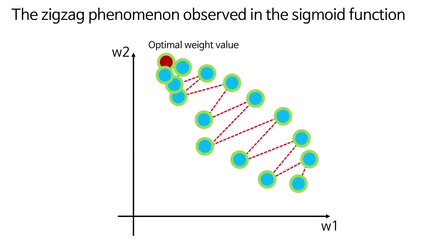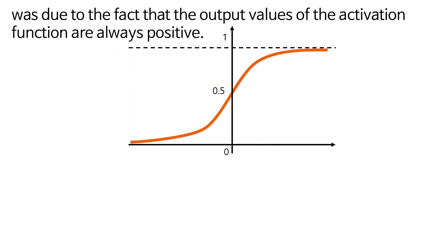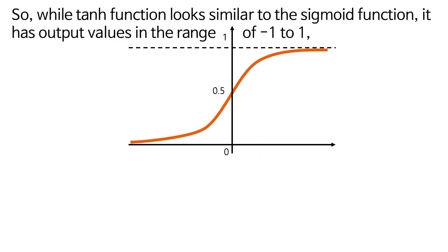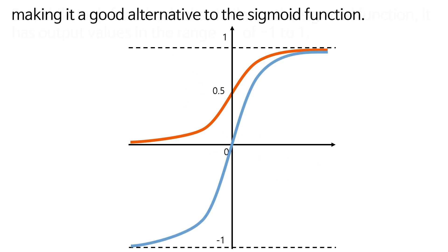Chapter 2: Beyond the Weaknesses of Sigmoid. The zigzag phenomenon observed in the sigmoid function was due to the fact that the output values of the activation function are always positive. So, while hyperbolic tangent function looks similar to the sigmoid function, it has output values in the range of minus 1 to 1, making it a good alternative to the sigmoid function.